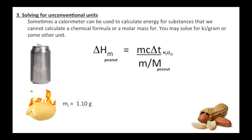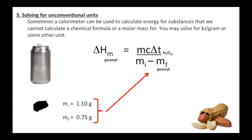Let's say that peanut weighed 1.10 grams, and after I burn it there's 0.75 grams leftover. Well, it's not this mass we want to use and it's not this mass - it's the difference. That's what was actually burned, right? So we take the mass initial, subtract the mass final, and then we can find kilojoules per gram.